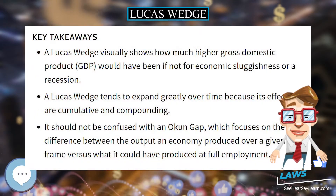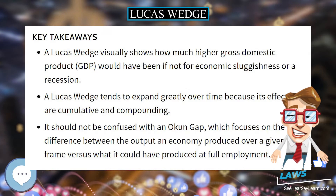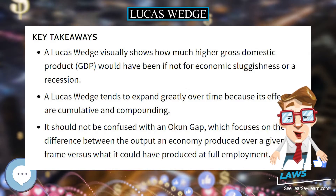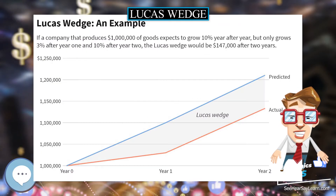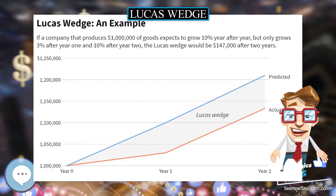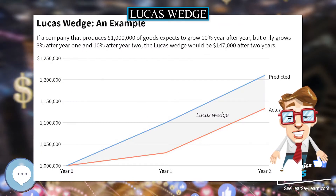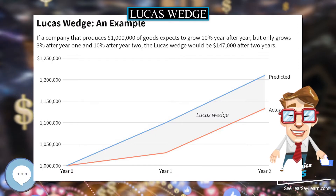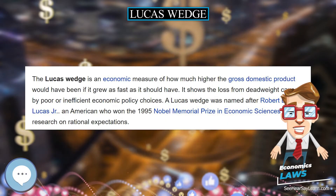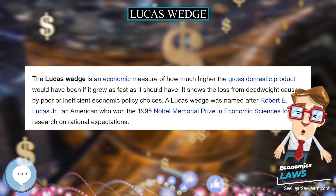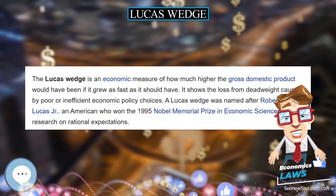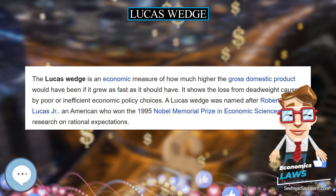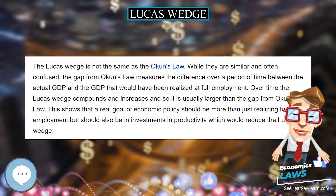The Lucas wedge is an economic measure of how much higher the gross domestic product would have been if it grew as fast as it should have. It shows the loss from dead weight caused by poor or inefficient economic policy choices.